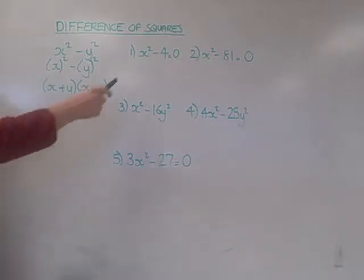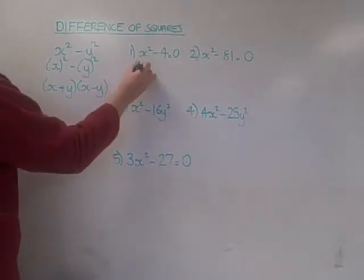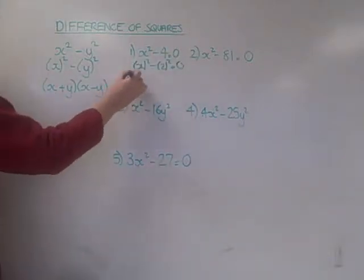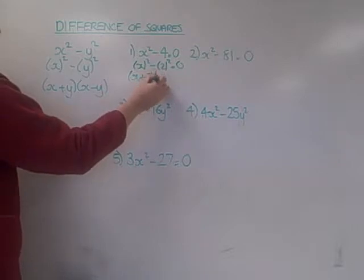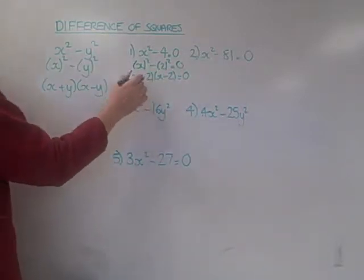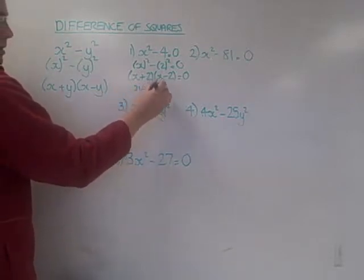For this one here, I notice this is x² - 2², so this would be (x + 2)(x - 2). And to solve equal to 0, I'm just going to take the opposites here, so x = -2 and x = 2.